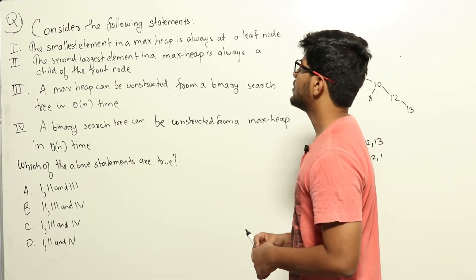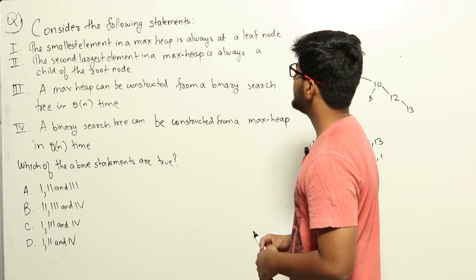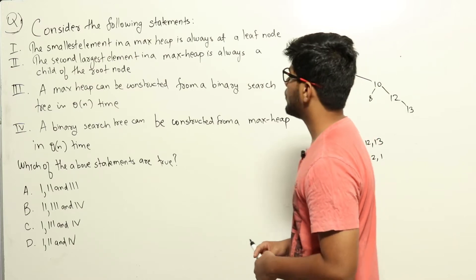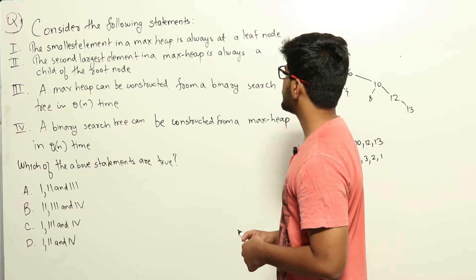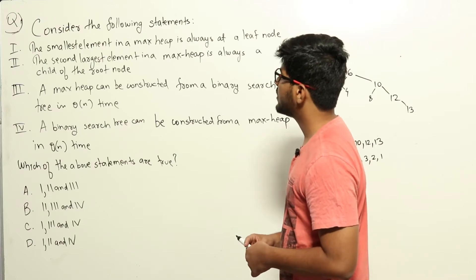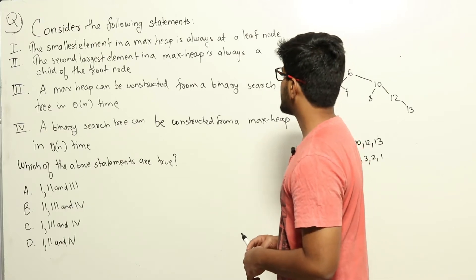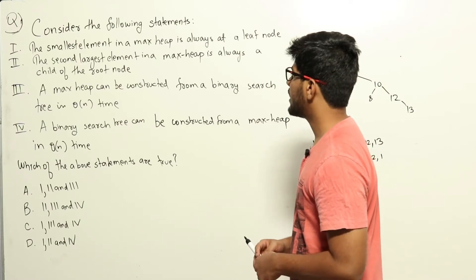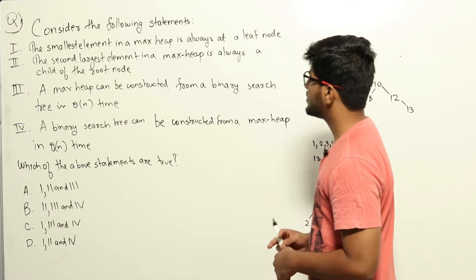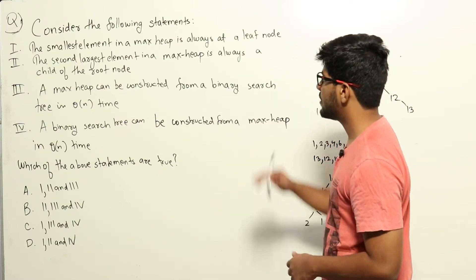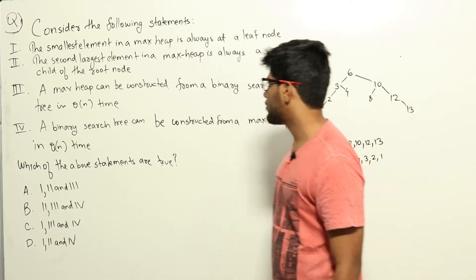Consider the following statements. 1. The smallest element in a max heap is always at a leaf node. 2. The second largest element in a max heap is always a child of the root node. 3. A max heap can be constructed from a binary search tree in theta(n) time. 4. A binary search tree can be constructed from a max heap in theta(n) time. Which of the above statements are true?